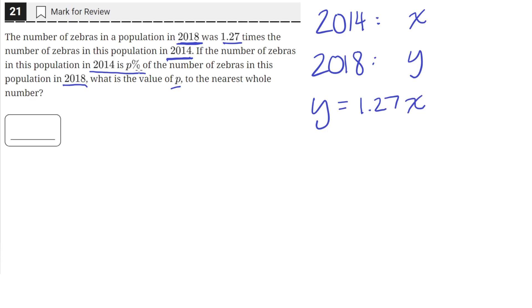And then we're also given that the number of zebras in 2014 is p% of the number of zebras in 2018. So that's saying the population in 2014, x, is equal to p% of y, since x is the population in 2014, and that is p% of the population in 2018, which is y.